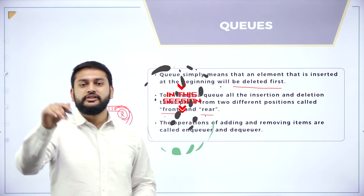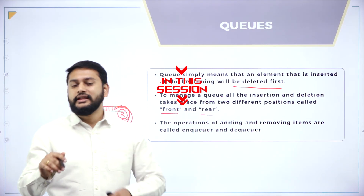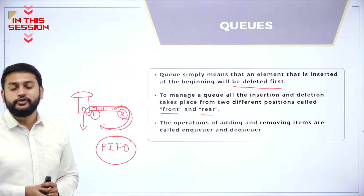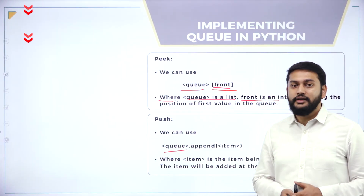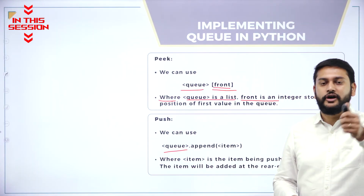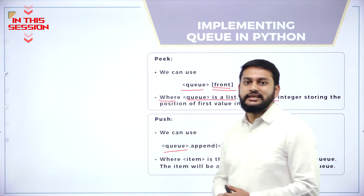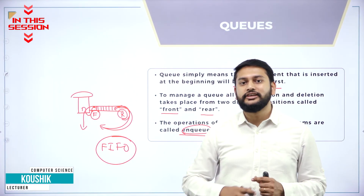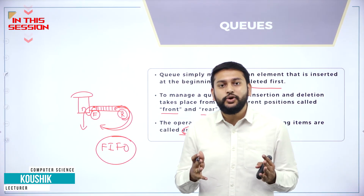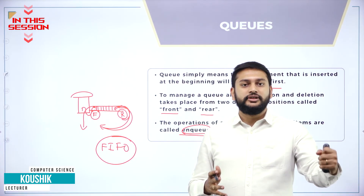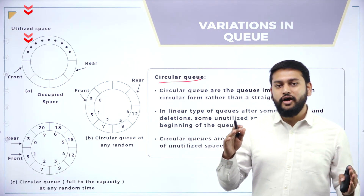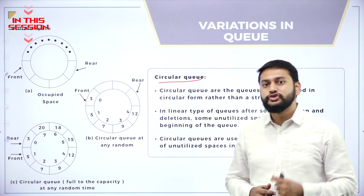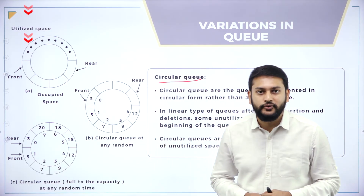The insertion will happen at the front and deletion will happen at the rear according to the queue concept. To insert an element, you have to use the function that is append. NQ means you are inserting an element inside the queue. DQ means you are deleting an element from the queue. If the end of the queue is pointing to the front of the queue, that forms the circular queue.